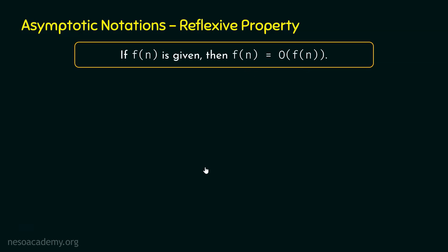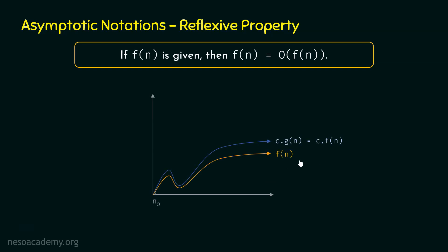Through this graph it also makes sense why F(n) can grow asymptotically bigger than F(n). Here, in place of C times G(n), we have C times F(n), meaning F(n) is multiplied by some positive constant C. Because of this multiplication, C times F(n) is growing asymptotically bigger than F(n) after some N0. After N0, we can observe C times F(n) is growing asymptotically bigger than F(n). Hence we can say F(n) is O of F(n), and the reflexive property is satisfied for F(n).